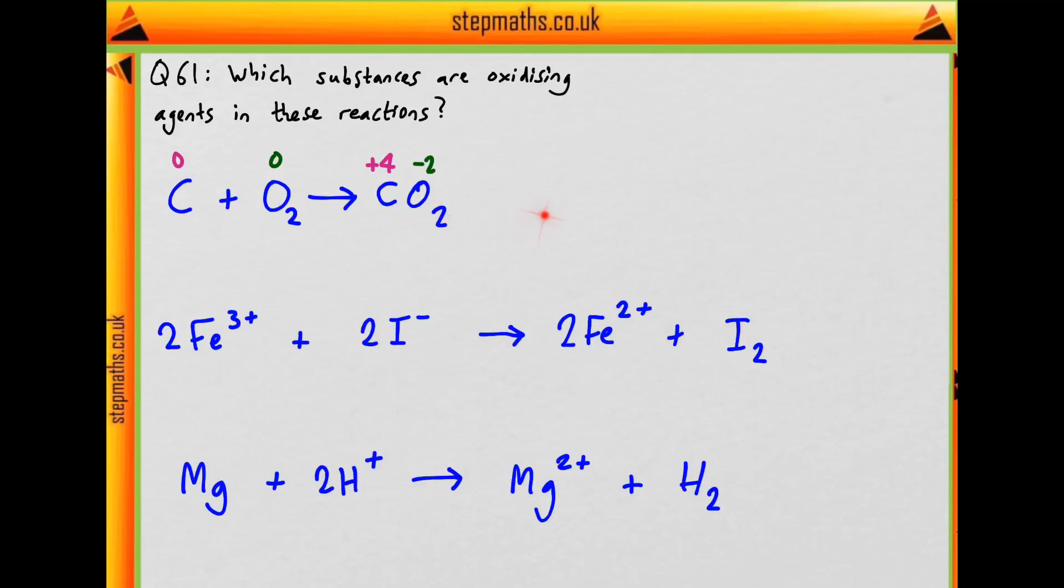So what's the oxidising agent? Which one's been oxidised? That's carbon, because it's lost 4 electrons. Therefore oxygen must be the oxidising agent, itself being reduced in the process.